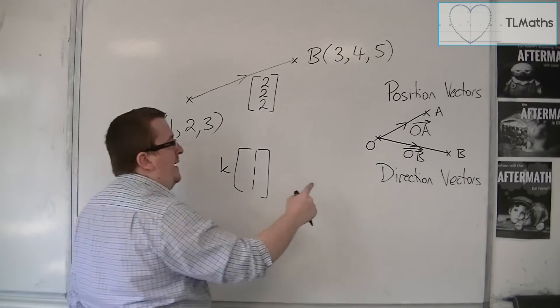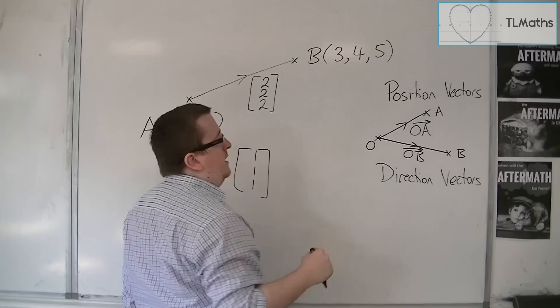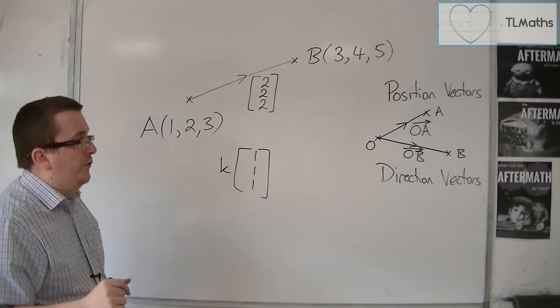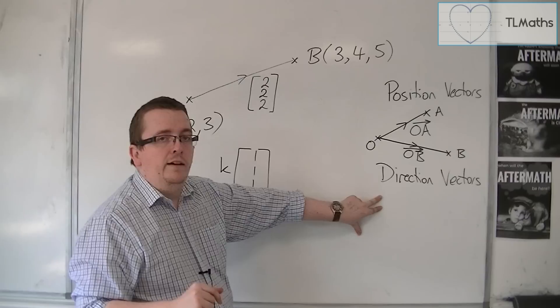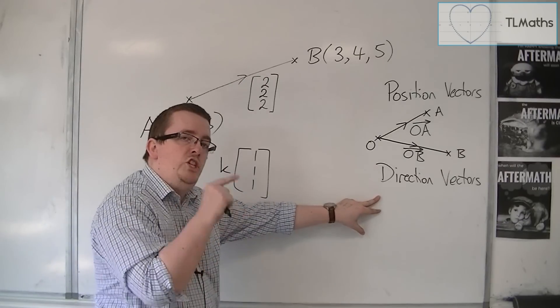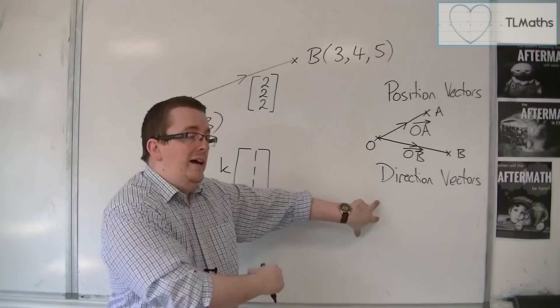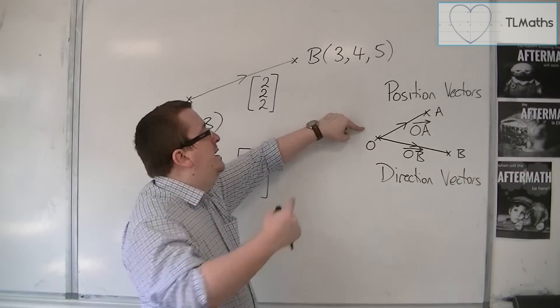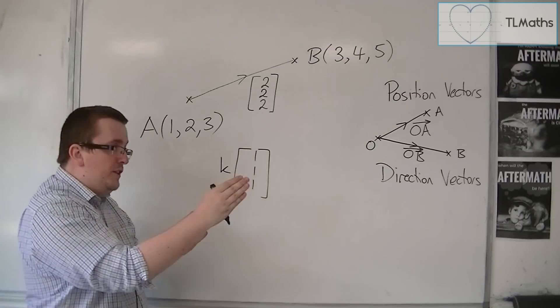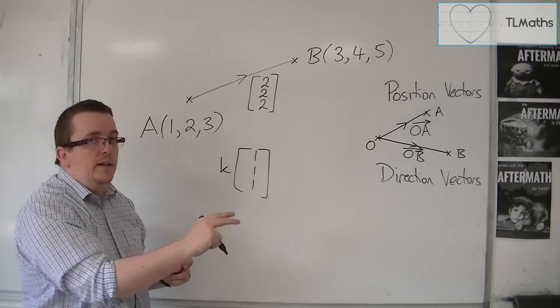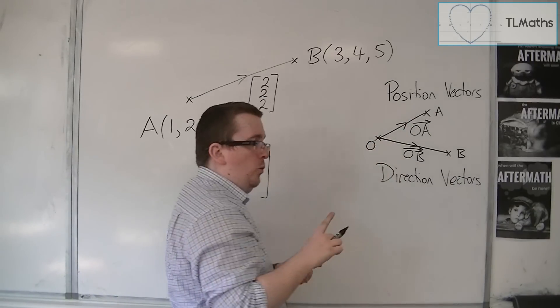So a position vector tells you how to get from O, the origin, to a coordinate in three-dimensional space. That's what a position vector is. A direction vector tells you the direction in which you need to go to get from any point to any other point. And that includes from the origin. You could say that to get from O to A, a direction vector could point you in the correct direction. But a position vector is specifically how to get from the origin to that coordinate.